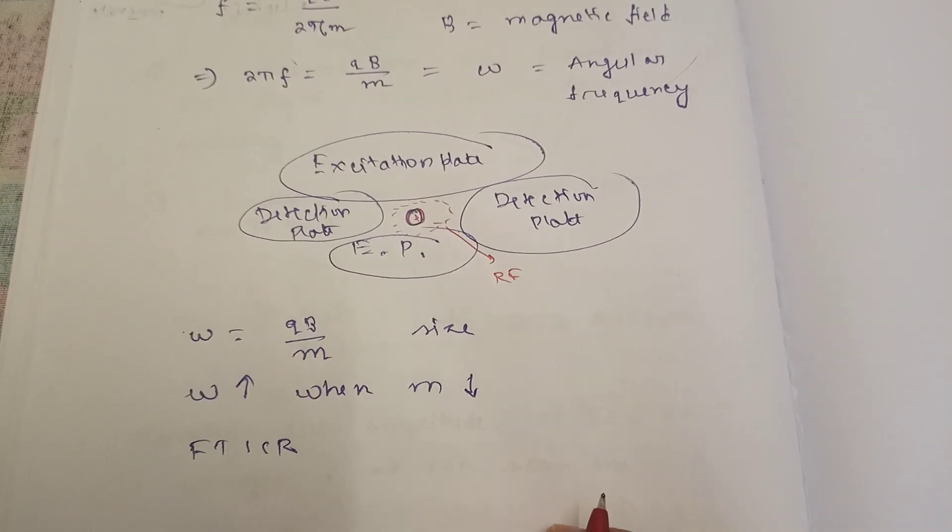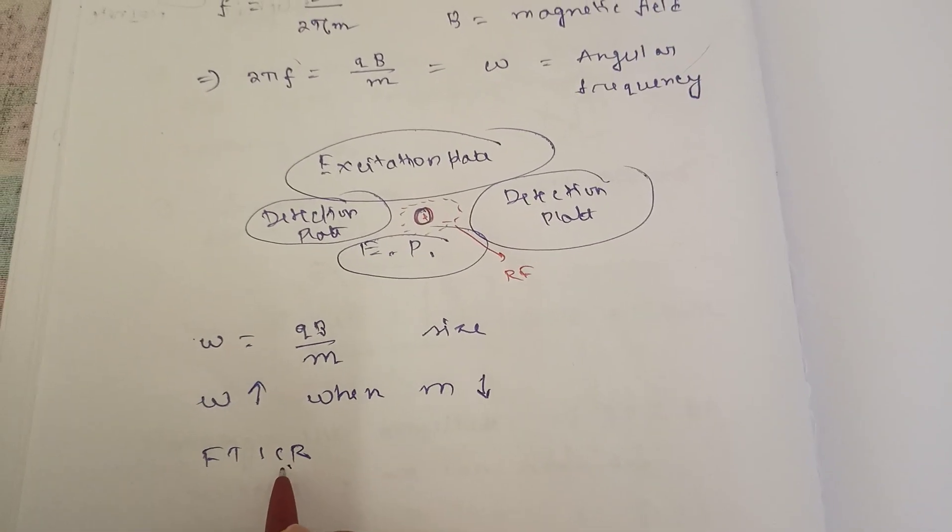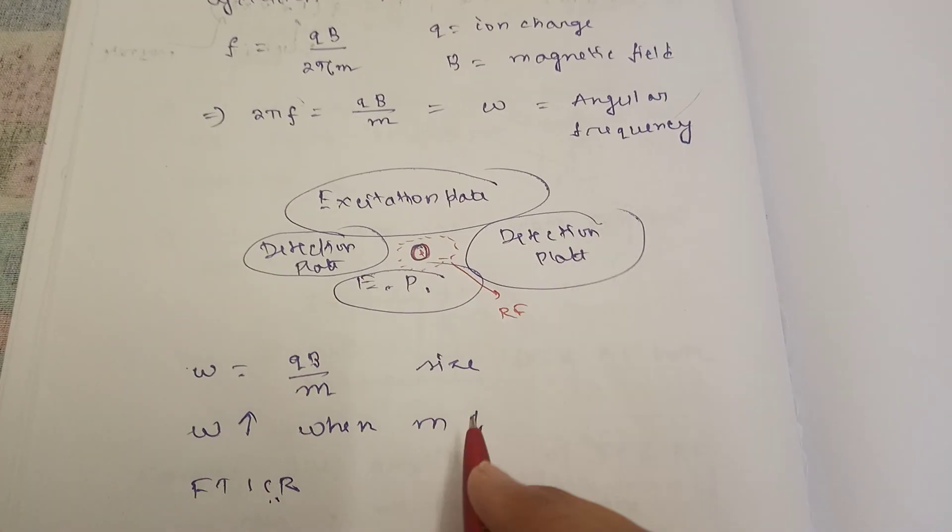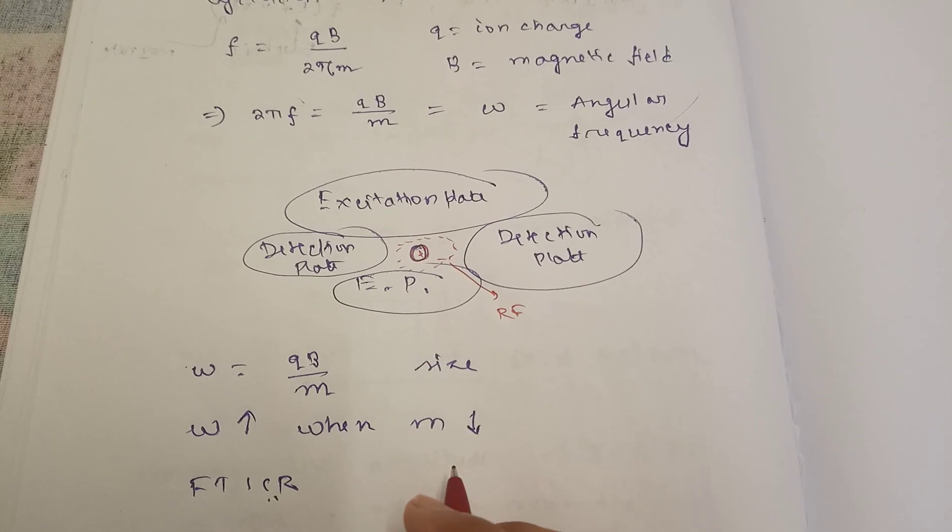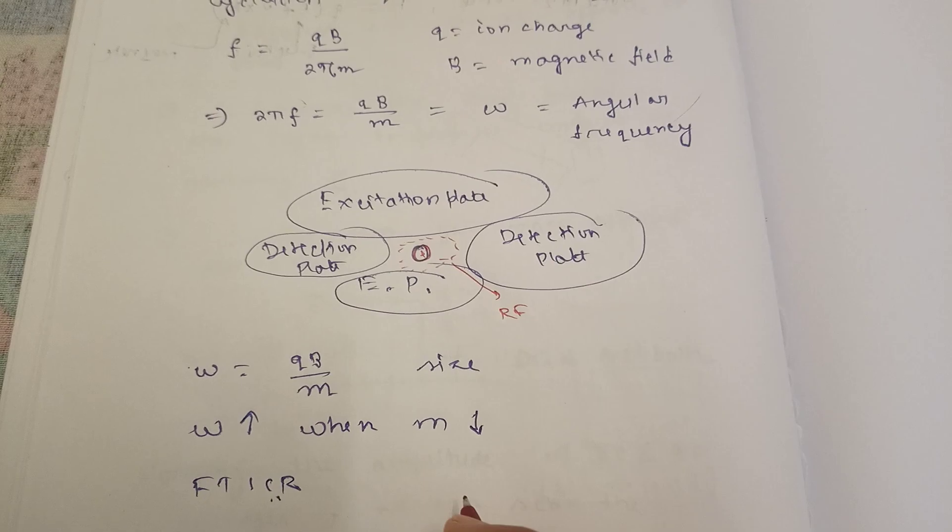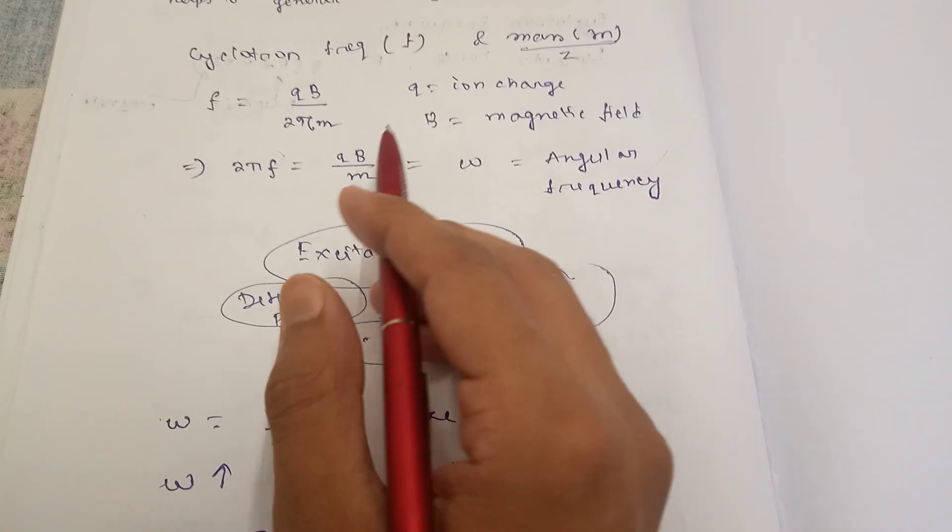This is analyzed by FT-ICR. FT-ICR helps us convert these vibrational frequencies or angular frequencies into a mass spectrum that shows the relative abundance of ions at different masses.